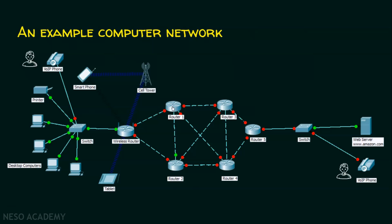Router 1 will process the VoIP phone's data first, because it is real-time communication. In real-time communication, delays are not acceptable. Whereas delays are not a problem in email communication — a delay of one second in email is not going to hurt the communication. But a delay of one second in real-time communication matters a lot. That is why this router gives priority to real-time communication over normal communication. When a router experiences two different kinds of data at the same time, it should know which data to give priority to. This is quality of service.